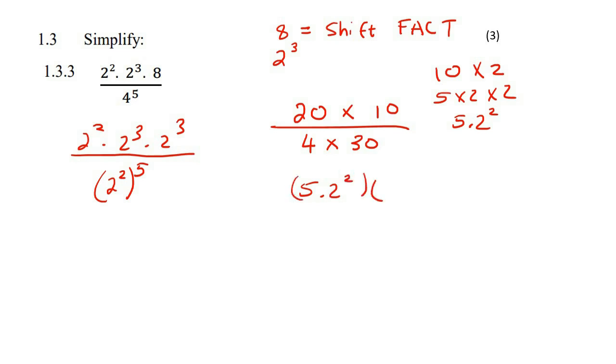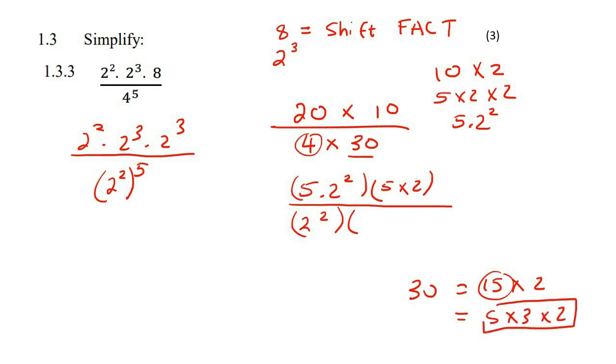Then the number 10 is the same as five times two, that can't be broken down any further. The number four is the same as two to the power of two, or two times two. The number 30, you could think of it as 15 times two, or 10 times three, it doesn't matter, you'll still get to the same answer. Then 15 is the same as five times three. And there we go, you cannot go any further. So you could say five times three times two.